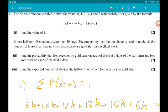Part 2 says to find the probability that Ben receives no gold stars on each of the first 3 days of the half term and 2 gold stars on each of the next 2 days.